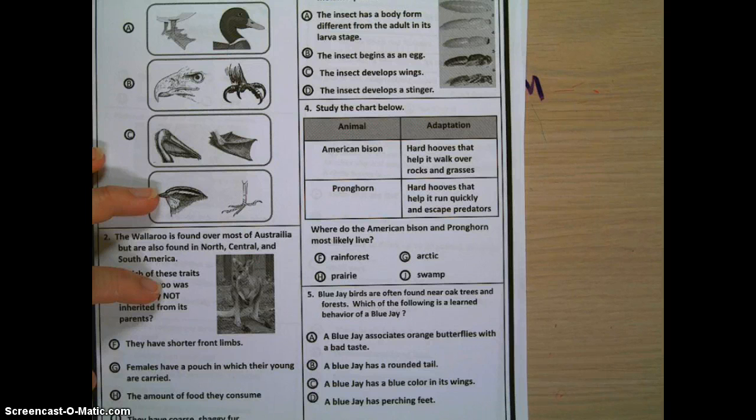A, a blue jay associates orange butterflies with a bad taste. B, a blue jay has a rounded tail. C, a blue jay has a blue color on its wings. D, a blue jay has perching feet.